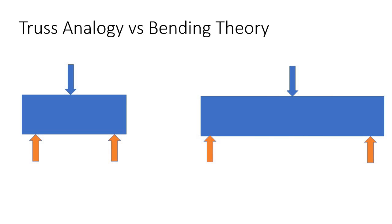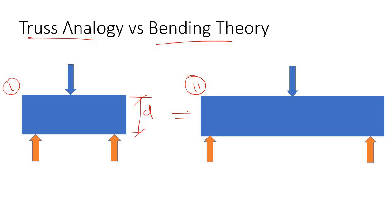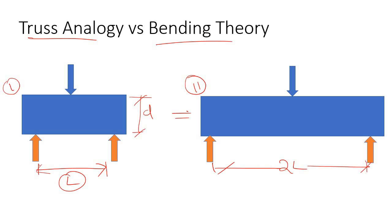To recap the basic difference between truss analogy and bending theory, consider two beams. The first and the second beam both have the same depth, but the span or effective length of these two beams is completely different — if one is L, the other is almost 2L. In both cases, let's say the load is also the same, or maybe in some cases the load is higher for one.